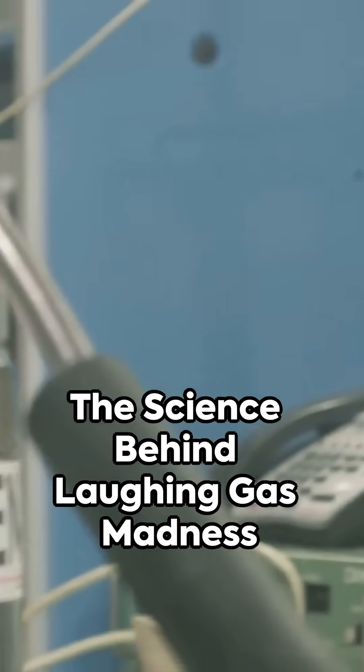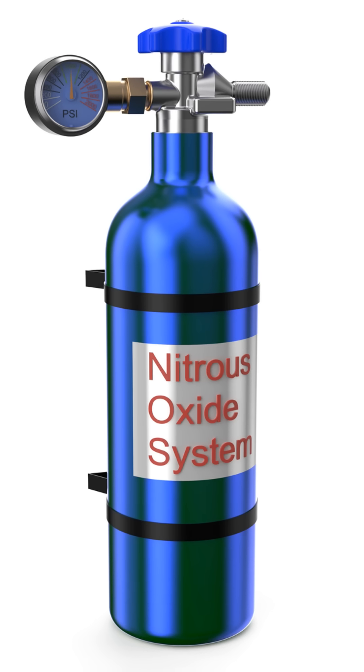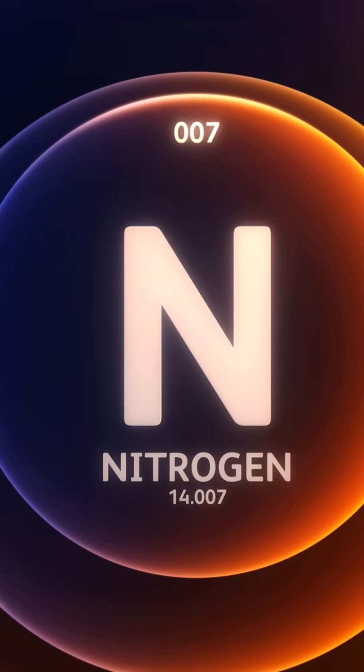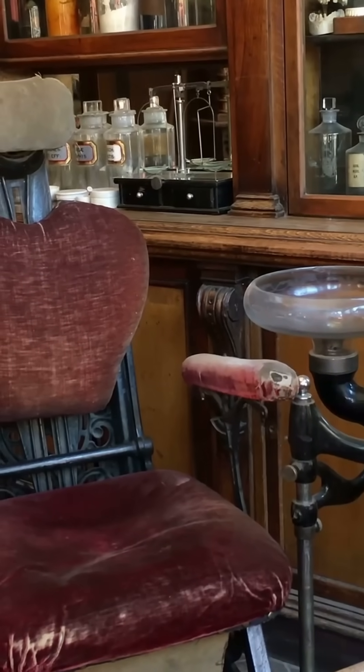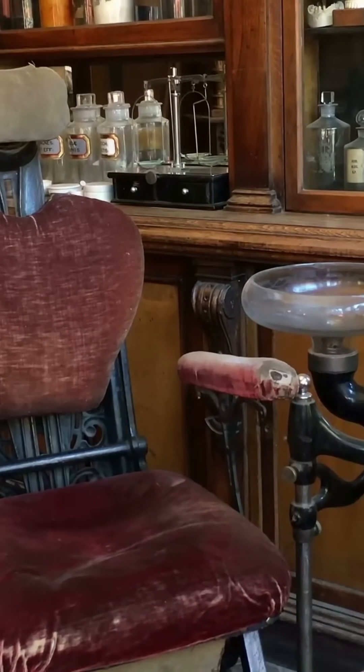Laughing gas, also known as nitrous oxide, is a colorless, odorless gas. Chemically, it's composed of two nitrogen atoms and one oxygen atom. Historically, it was first used in dentistry for its anesthetic properties.